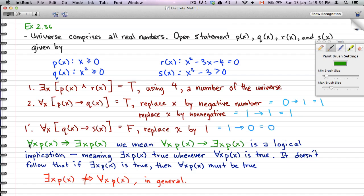That's a simple example of how we use open statements and how we use quantifiers to establish validity of arguments. Now, when we say for all x, Px logically implies exists x Px, we mean a logical implication.